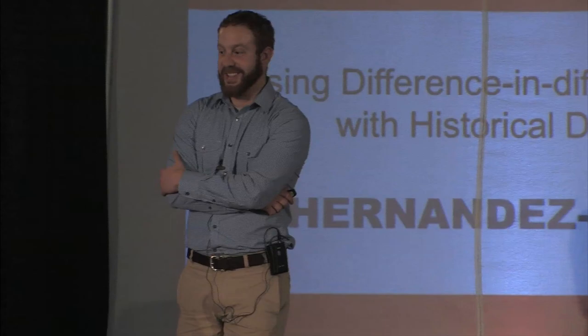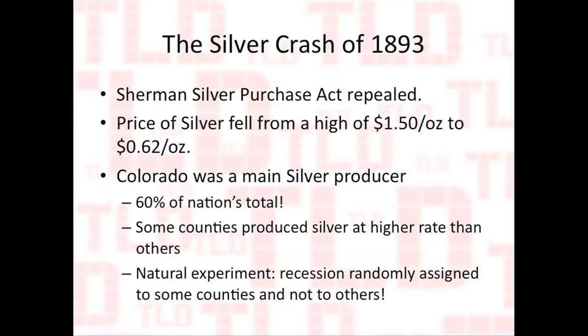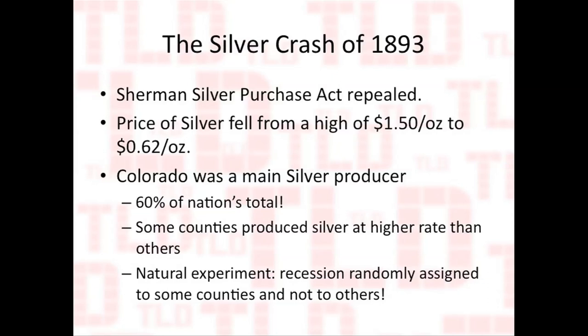Here's my story. Silver was a big deal in Colorado in the 1890s. In 1890, the federal government started buying up silver in huge amounts — the price skyrocketed, as high as $1.50 an ounce in 1890 dollars. Then in 1893, the Sherman Silver Purchase Act got repealed and the price of silver fell dramatically. Colorado was a big silver producer, and this decrease affected Colorado a lot more than the average state since Colorado was producing 60% of the nation's total silver.